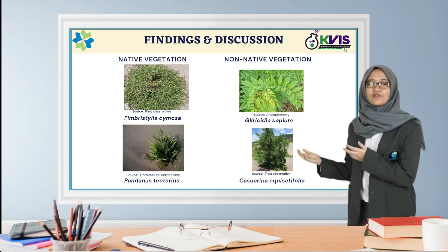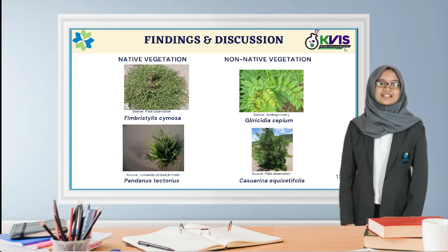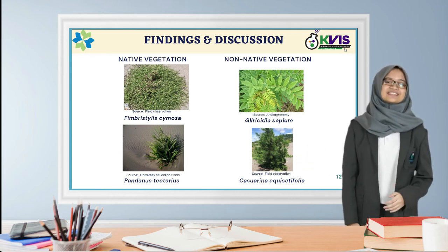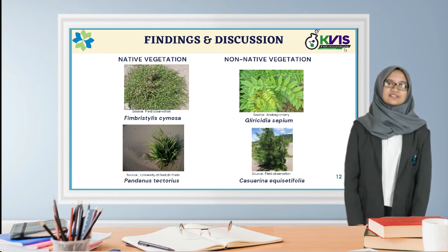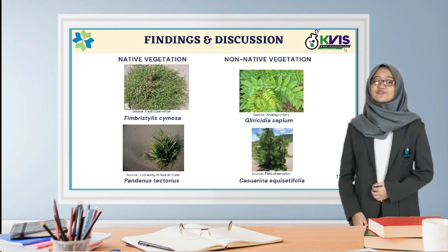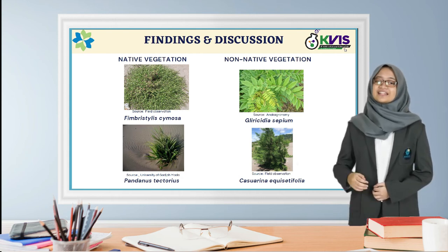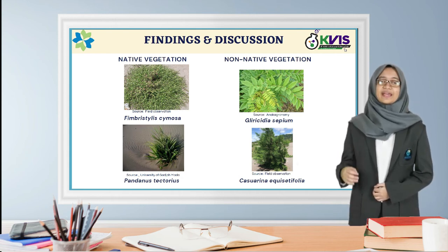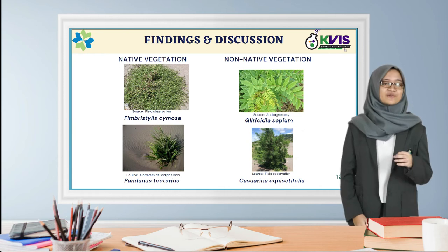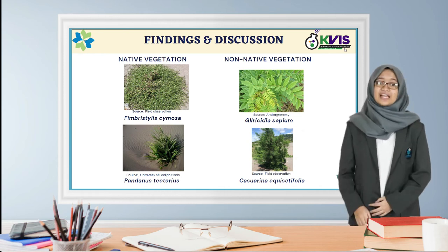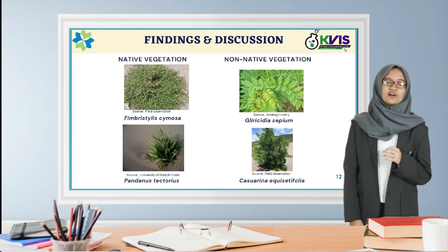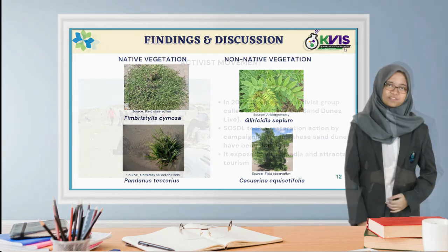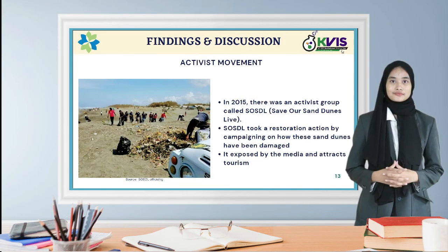This is the picture of four vegetation species that have the biggest impact on the sand dune, with the top four highest importance values based on the previous table. There are two native and two non-native vegetation species. For the native vegetation, there are Timbris telissimosa and Pandanus tectorius. The non-native vegetation are Gliricidia sepium and Casuarina equisetifolia. These four species can be found relatively easily on Parangtritis Sand Dune.